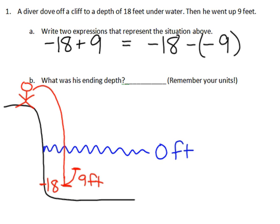So there are two expressions that represent that situation. When I work that out, he's still going to be 9 feet below the surface, so that's going to represent negative 9 feet. And any time you've got words in the problem, you're going to make sure you include some sort of units — in this case, that would be feet.